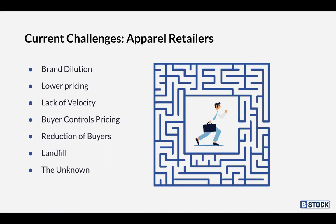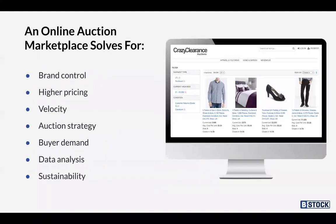Velocity is about getting stock out of warehouses and moving so that you're gaining cash for that stock rather than it growing as debt sitting in warehouses. Another current challenge is a reduction of buyers — due to logistics challenges during the virus and access to capital. However, we're now starting to see an increase in buyers as those with side hustles or other businesses are turning to the secondary market to buy stock.